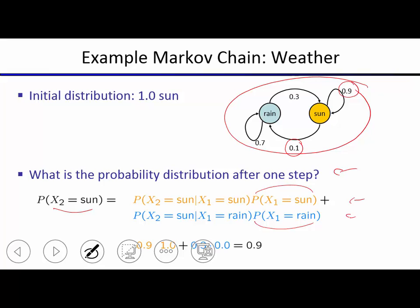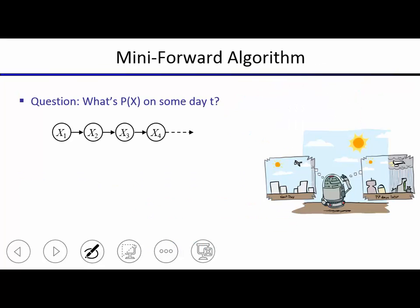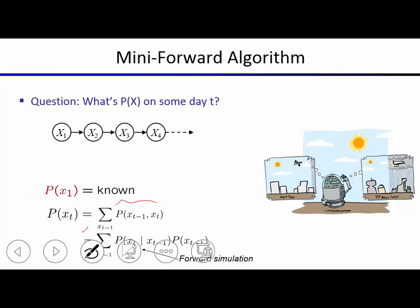The mini forward algorithm: to get the distribution over the state at some future time t, we start with what we know at time one, then apply a recursive update equation to go from any time t minus one to t. The equation sums over all possible states at time t minus one the product of the conditional distribution for x_t given x_{t-1} times the distribution for x_{t-1}.